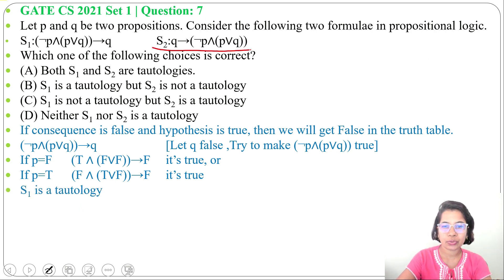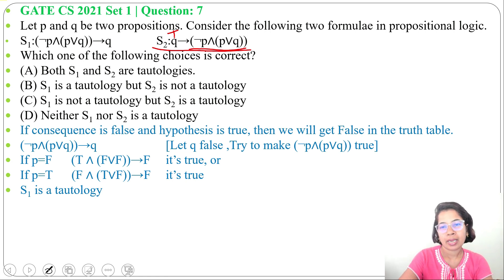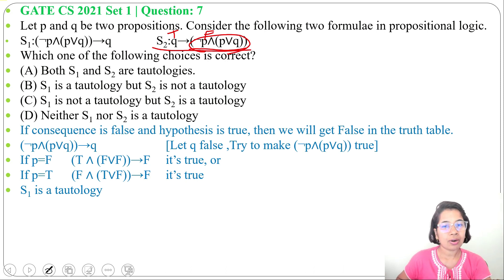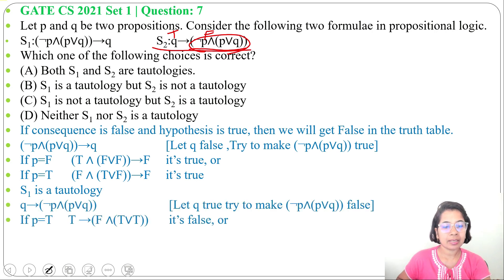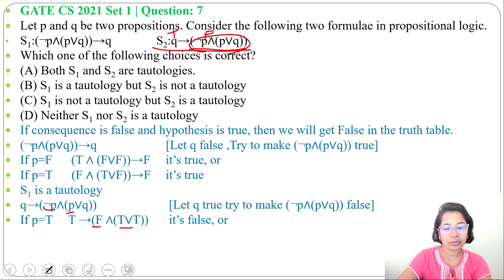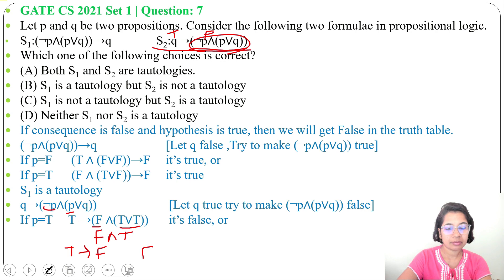Next we'll solve S2: Q implies negation P, and P or Q. Let Q be true, and we try to make the second part false. When P is true, negation P is false. Then true or true is true. False and true is false. So true implies false — that's false.